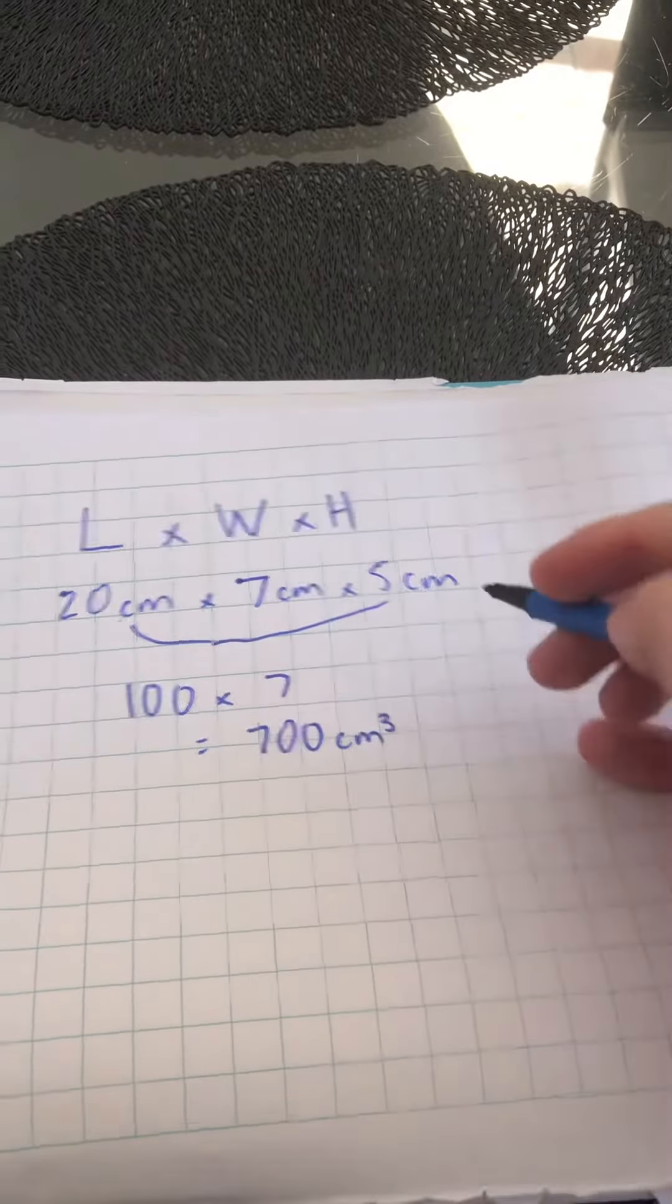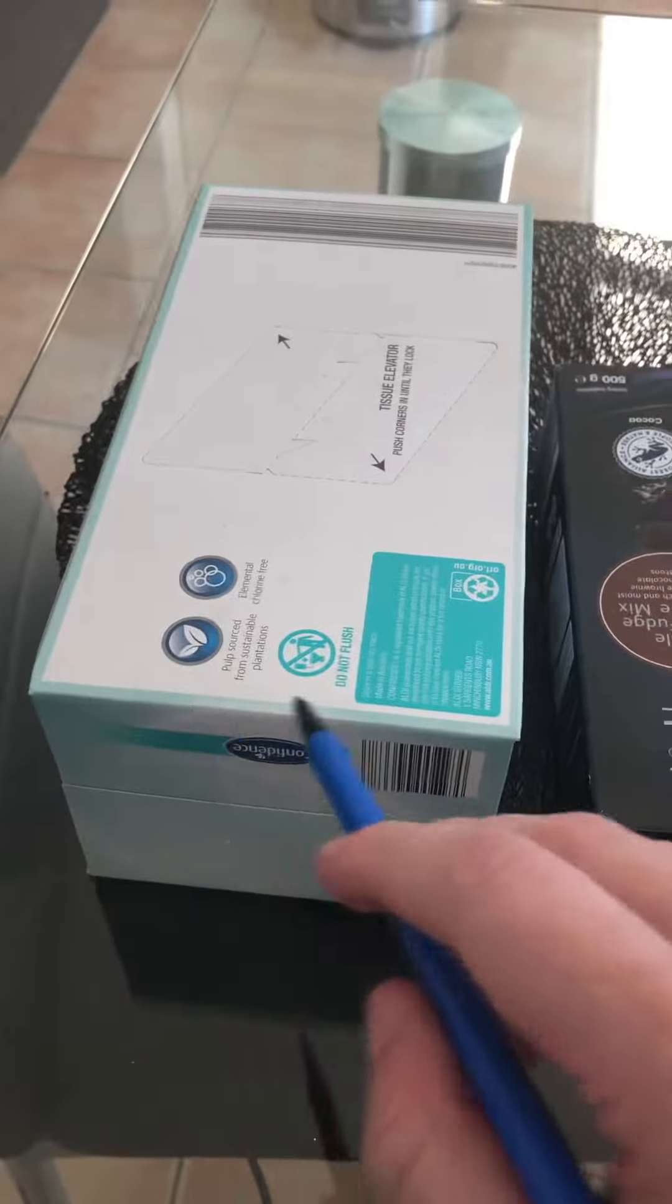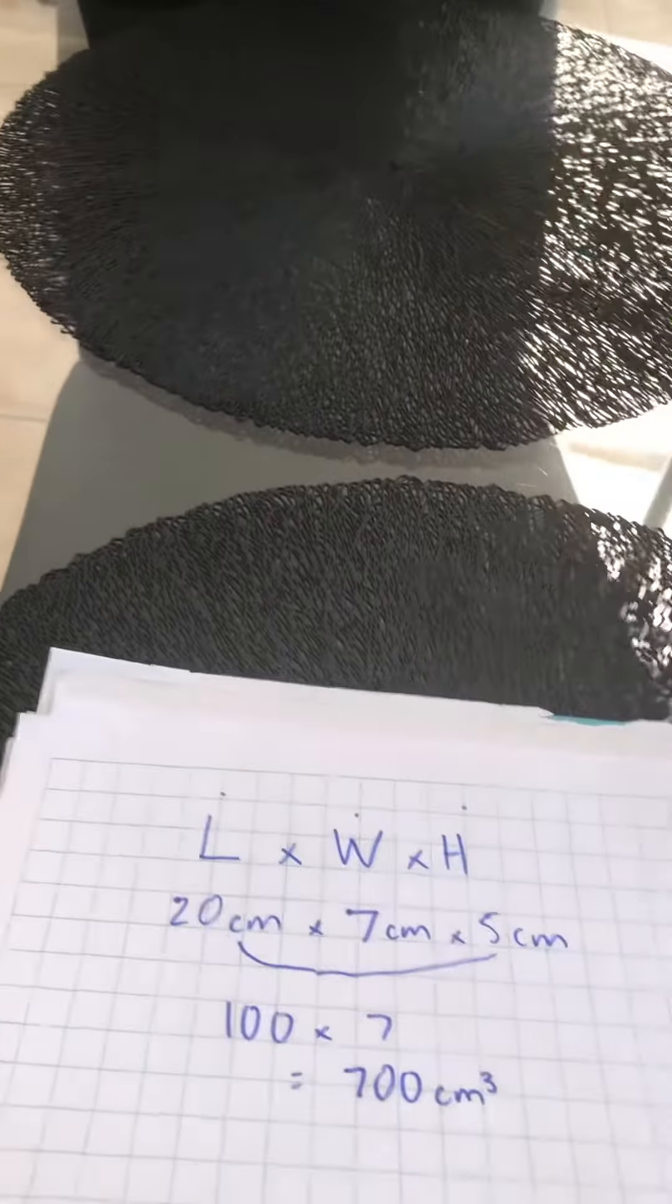The reason that I've got the cubed here is because I've got one, two, three different dimensions that I had to measure: the length, the width, and the height to find out how much space that tissue box takes up.